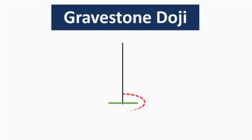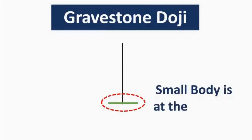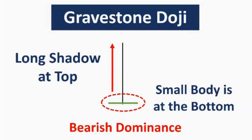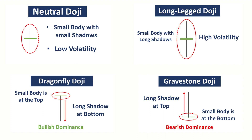The next type is the gravestone doji. Here the small body of this candle is at the bottom, with a long shadow at the top — the opposite of the dragonfly doji. This type of candle indicates bearish dominance in the market, approximately 60% bearish and 40% bullish. It is not 100% bearish, so for every doji you will require confirmations. To master trading and technical analysis, you must practically understand these small details.